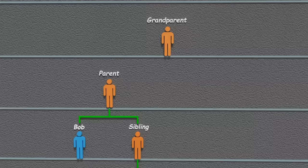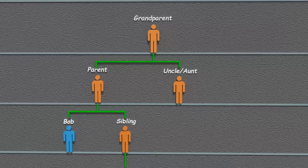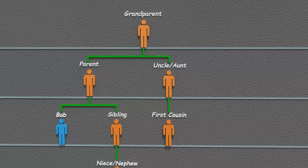Now let's expand this above a little bit. Bob's parent also has a parent, which would be Bob's grandparent. They have another child besides Bob's parent. This is Bob's aunt or uncle.